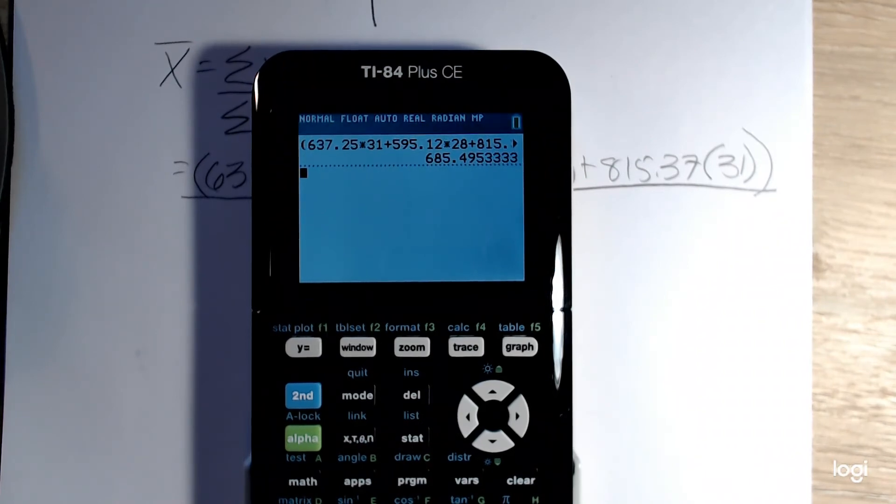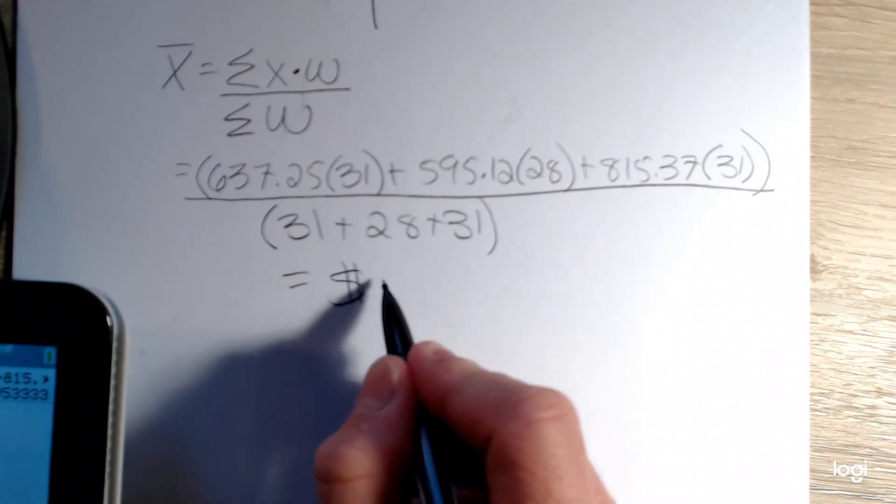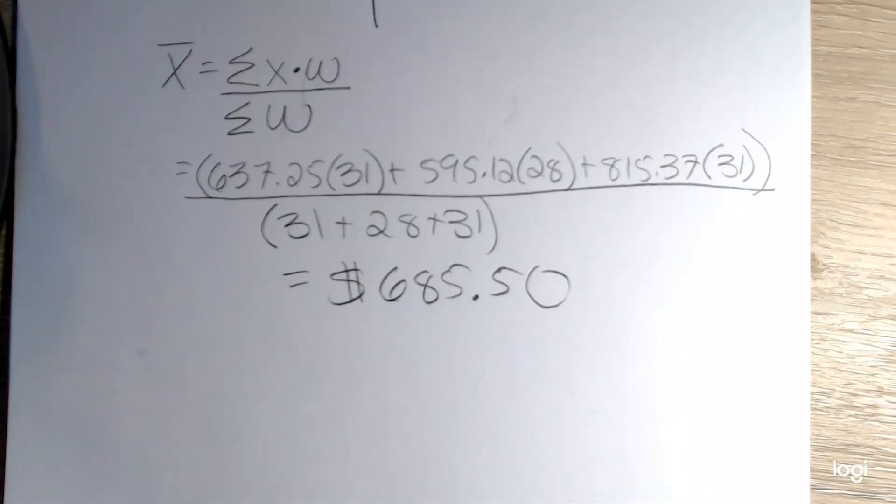And then my average monthly balance over that three month period will be 685.50 rounding to two decimal places. Since we're talking about money, it would make sense to round to the nearest cent. So this answer in terms of dollars would be $685.50.